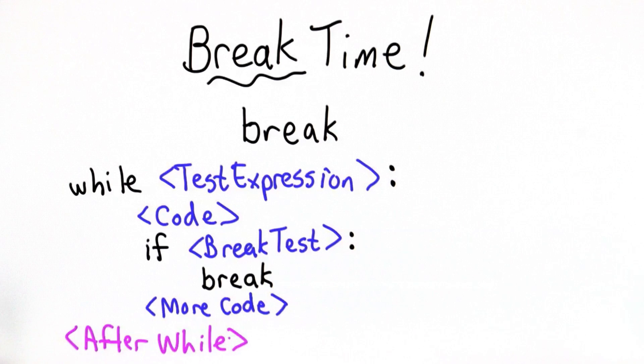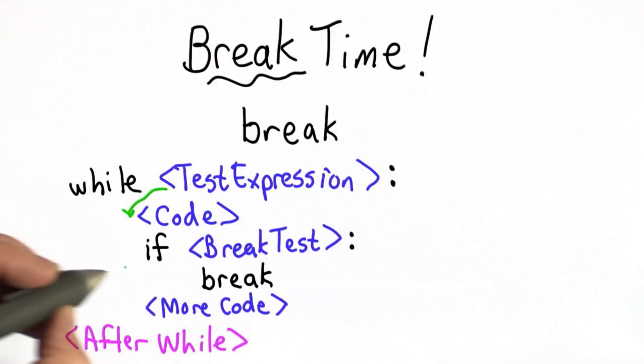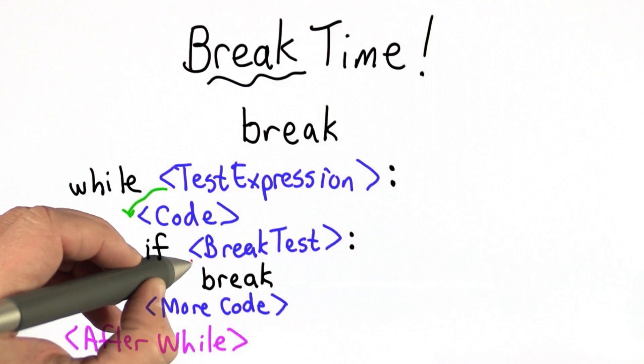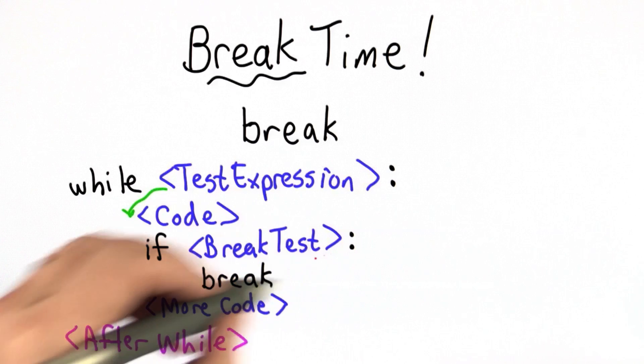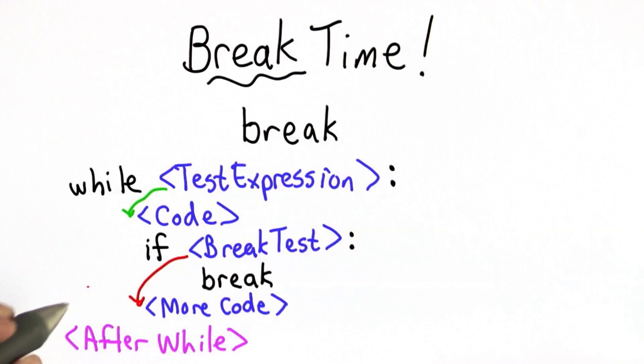What happens when we execute a loop with a break? It executes like a normal loop. If the test expression is true, we go to the code. If the break test is false, we don't execute the break. We continue with the more code.